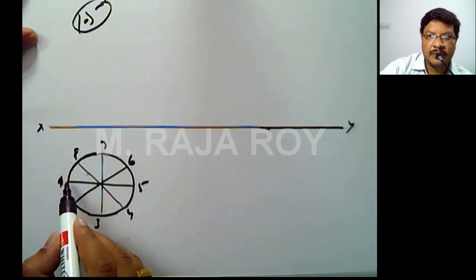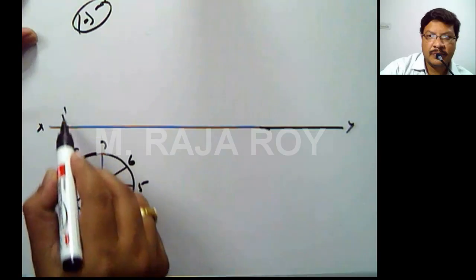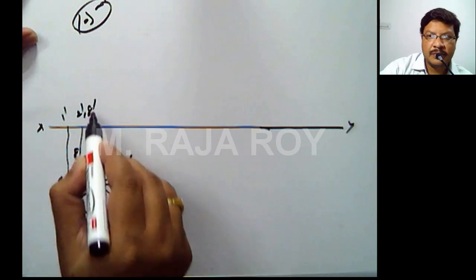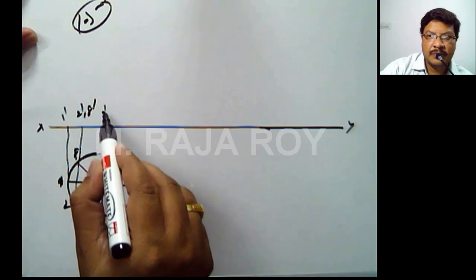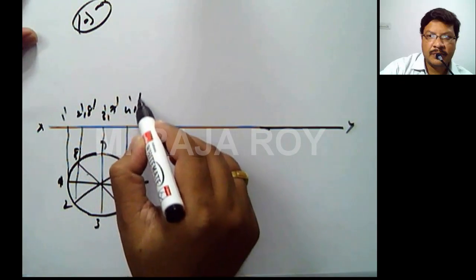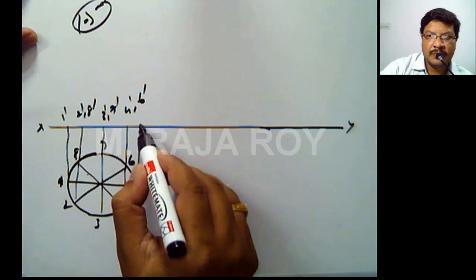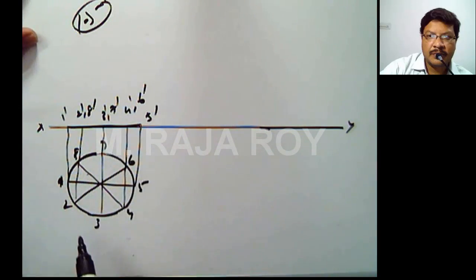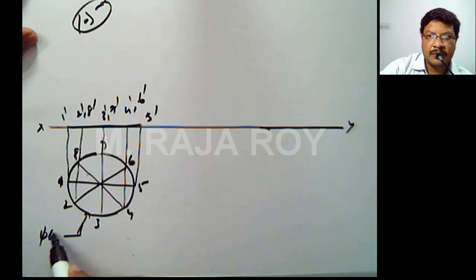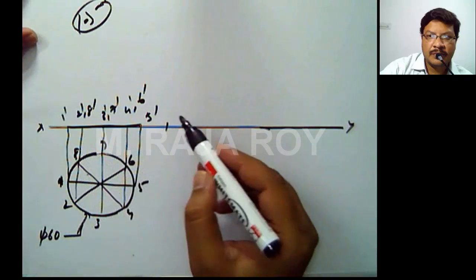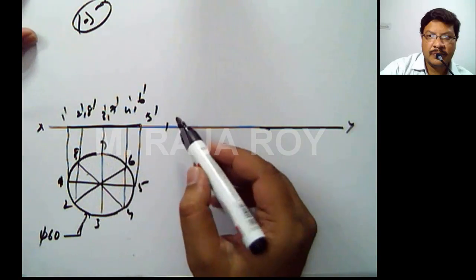Now I will project the front view. Somewhere here I will get 1'. This point is 2' and 8'. This point is 3' and 7'. This point is 4' and 6'. And this point is 5'. This is the front view, and this diameter is 60 mm.